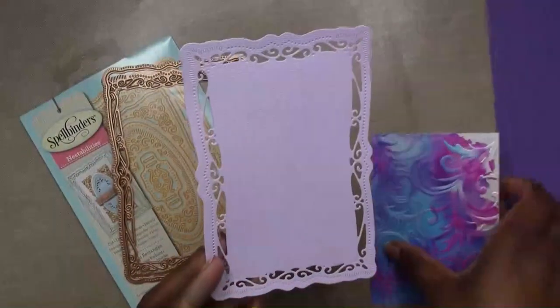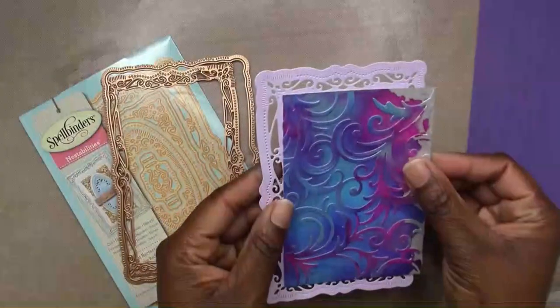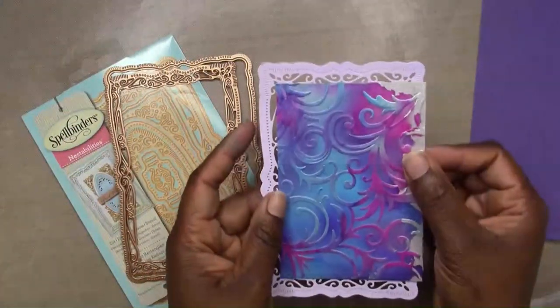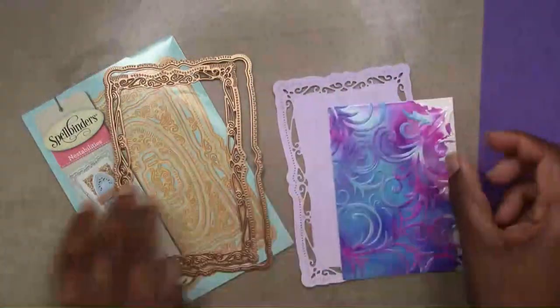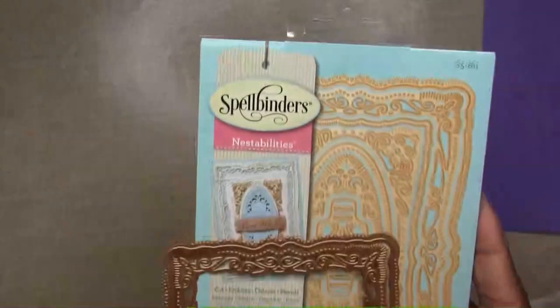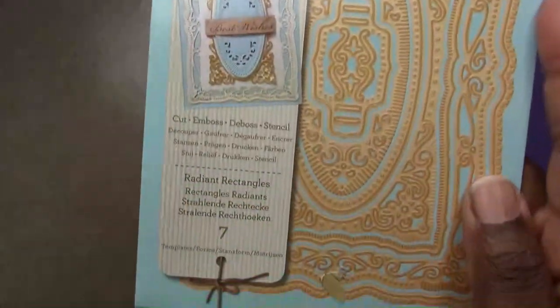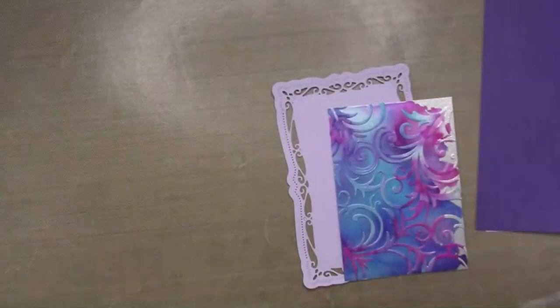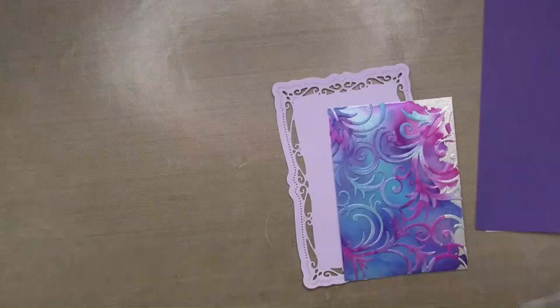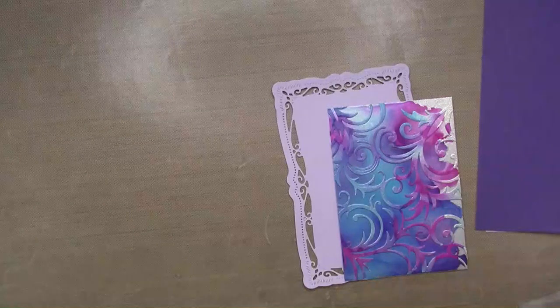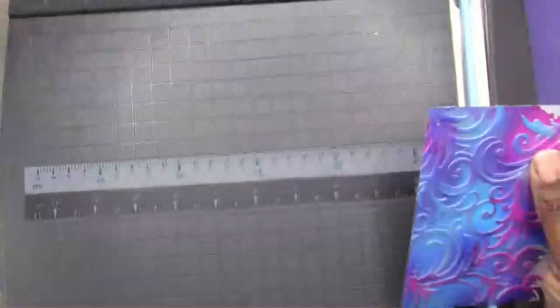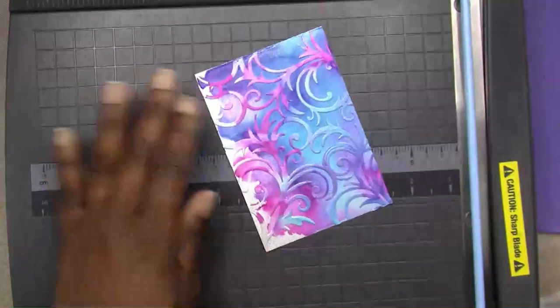This is where I brought in the Radiant Rectangles by Spellbinders, and I wanted to just mat that pretty shimmery panel on top of the rectangle panel. I'm going to cut that panel down to fit right in the inside of the rectangle panel, and that is going to be the background for today's card.